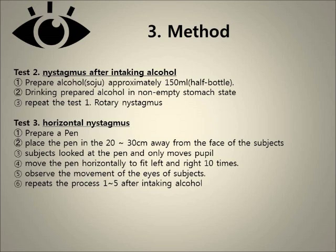Test 3 is Horizontal Nystagmus. Prepare a pen and place it 20–30cm away from the face of the subject. The subject looks at the pen, moving only the pupils. Move the pen horizontally left and right 10 times. Observe the movement of the eyes of the subject, then repeat the process after consuming alcohol.